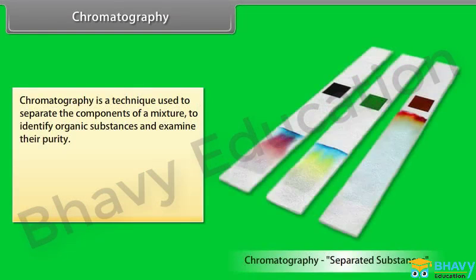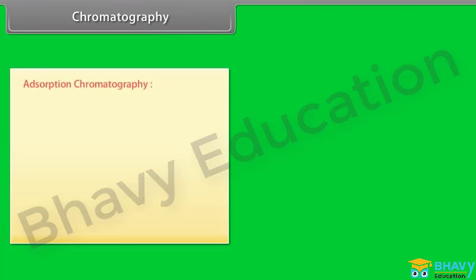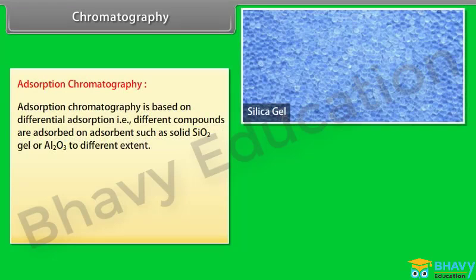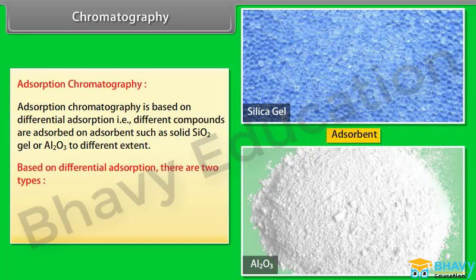Chromatography: Chromatography is a technique used to separate the components of a mixture, to identify organic substances, and examine their purity. Classification of chromatography includes adsorption chromatography and partition chromatography. Adsorption chromatography is based on differential adsorption, where different compounds are adsorbed on adsorbents such as solid SiO₂ gel or Al₂O₃ to different extents.